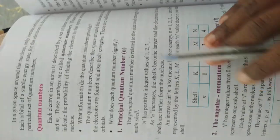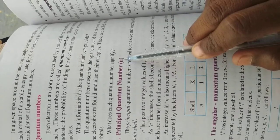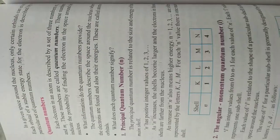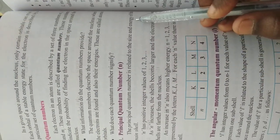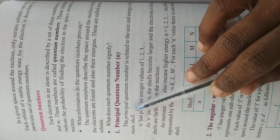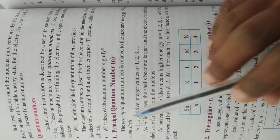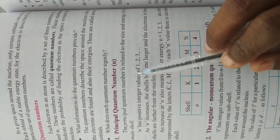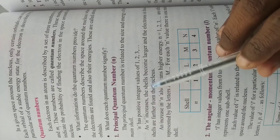Now we will see each one. Principal quantum number: n is the principal quantum number. The principal quantum number is related to the size and energy of the main shell. It indicates size and energy of the shell. n has positive integer values: 1, 2, 3, and so on. As n increases, the shells become larger and electrons in these shells are farther from the nucleus.